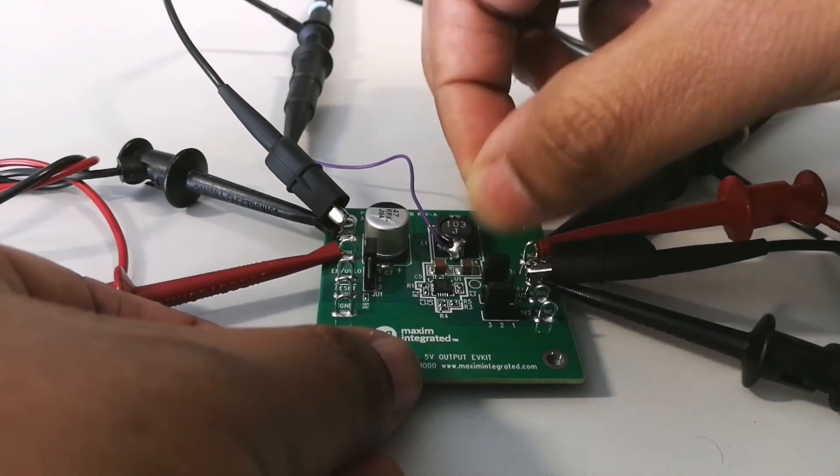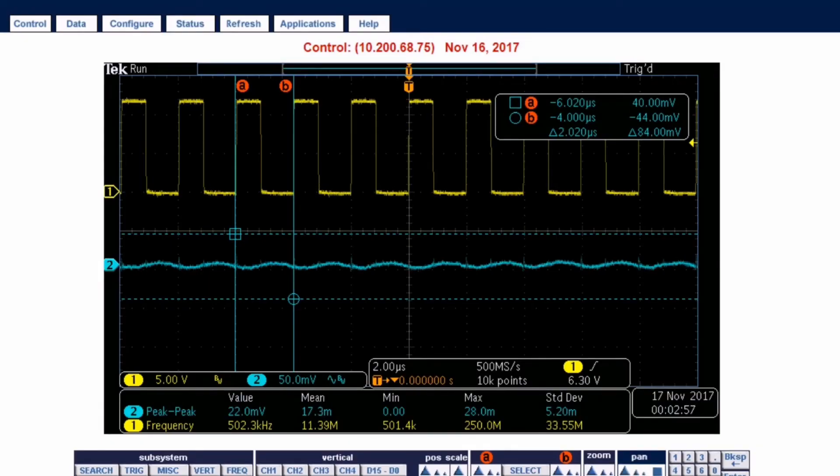Here, the board is configured in discontinuous conduction mode and right now running at 1 amp of load. Here again, I am now reducing the current from 1 amp down to lower load currents.